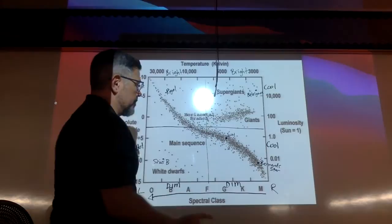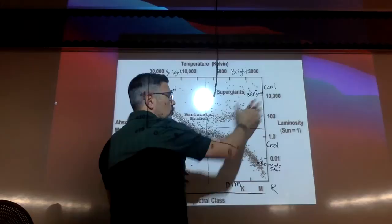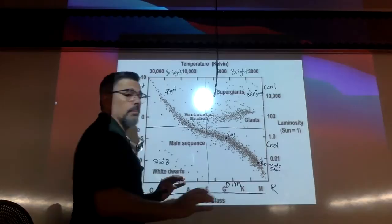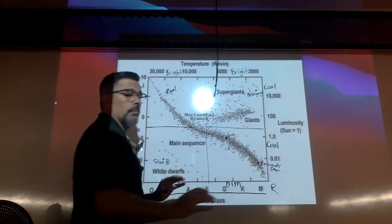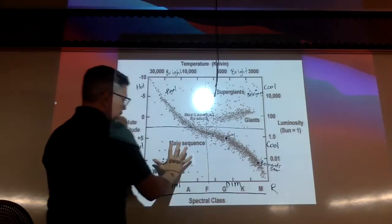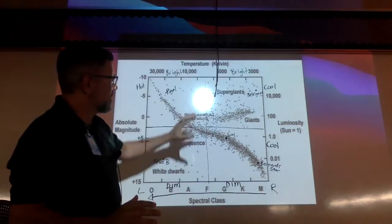So we know that this quadrant here is known as the bright, cooler stars. And this one down here would be the cooler, dim stars. Over here we have your bright and hot stars. And over here we have your hot and dim stars. That is what it is. There's nothing else to it.